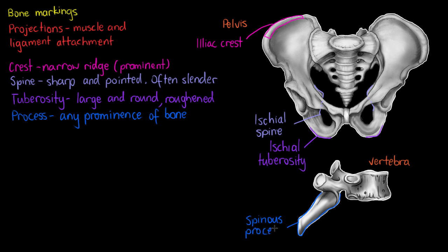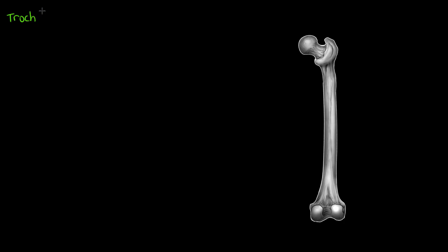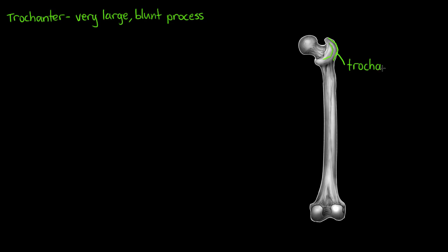To look at the next couple of projections we are going to move to a different bone — the femur. The next bone marking is the trochanter, which is very large, blunt, and irregularly shaped. This bone marking is a type of process found only on the femur, making it a very specific bone marking. We can see the trochanter on the lateral surface of the bone.